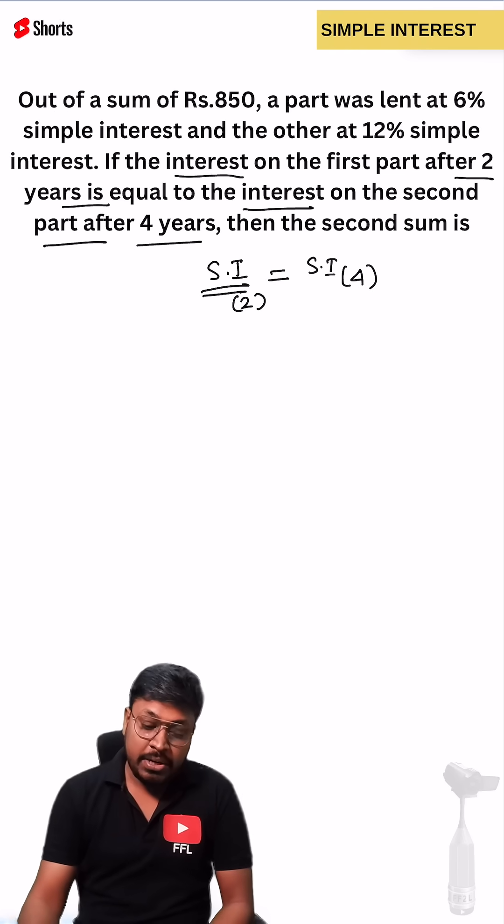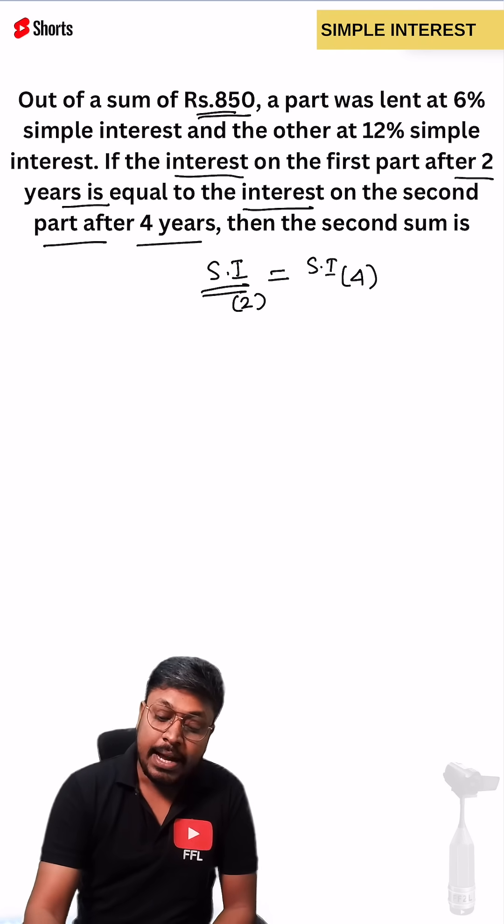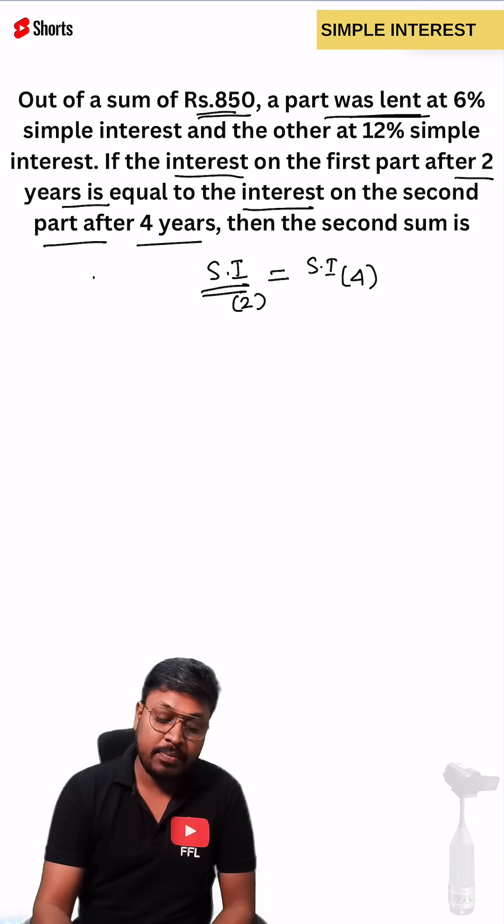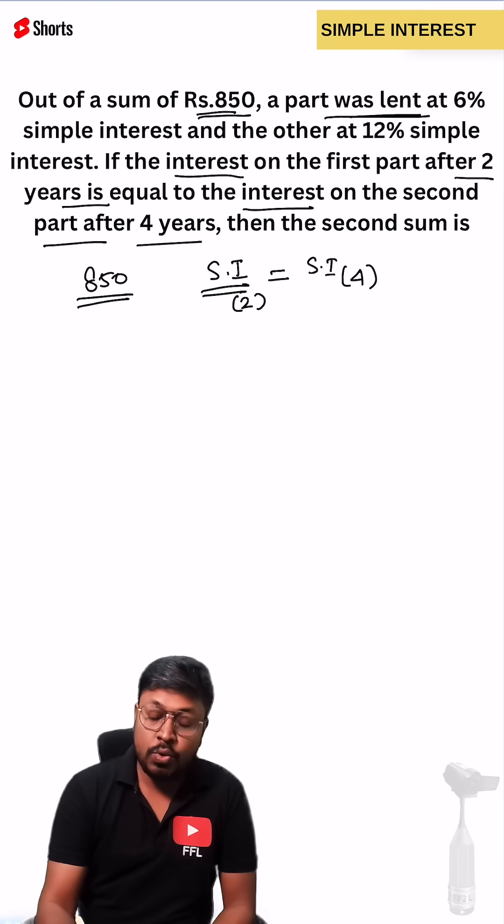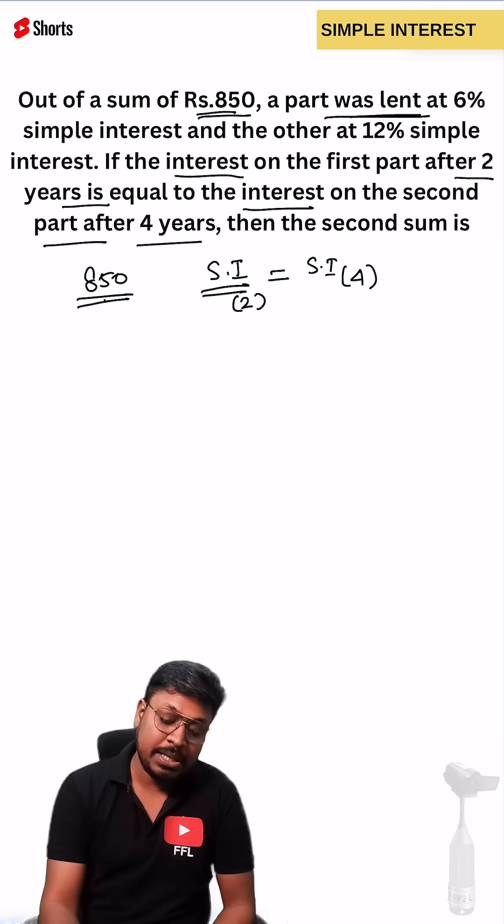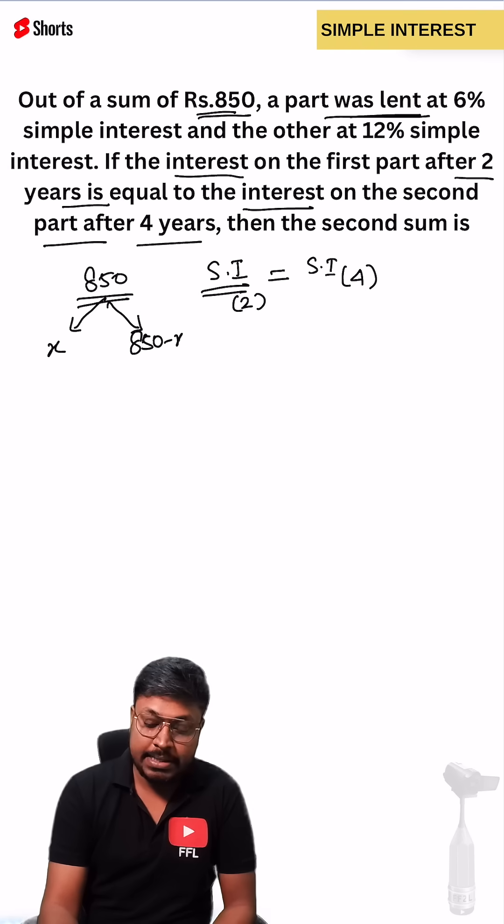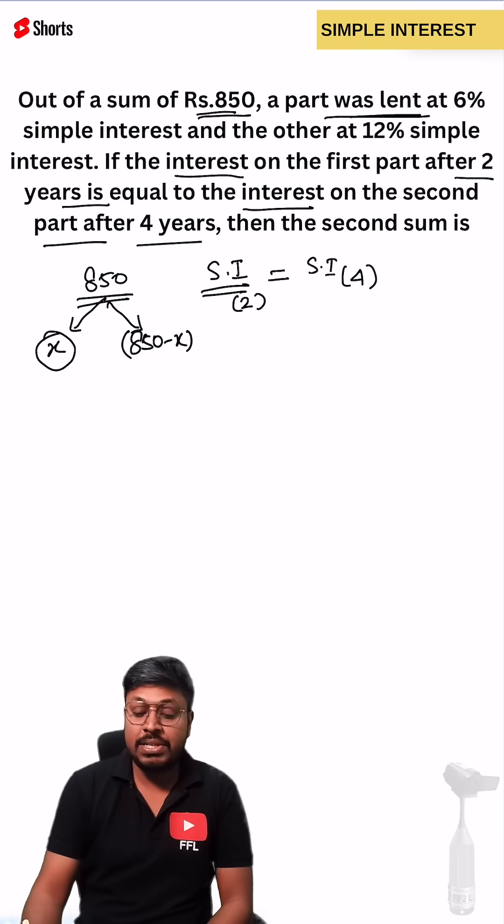According to the question the total sum is 850 and the part was lent out, that means from total 850 two parts were lent out. Let us assume that the first part is x. So second part will be the remaining 850 minus x. Solving this question is now very simple.